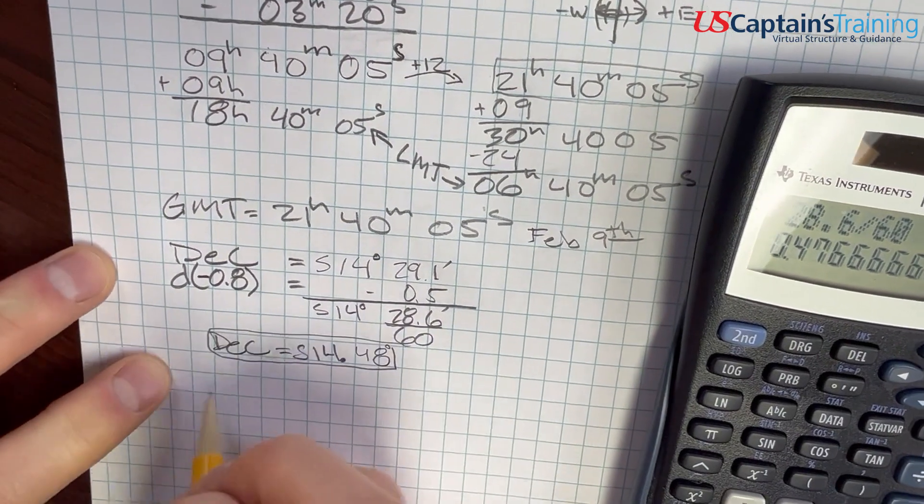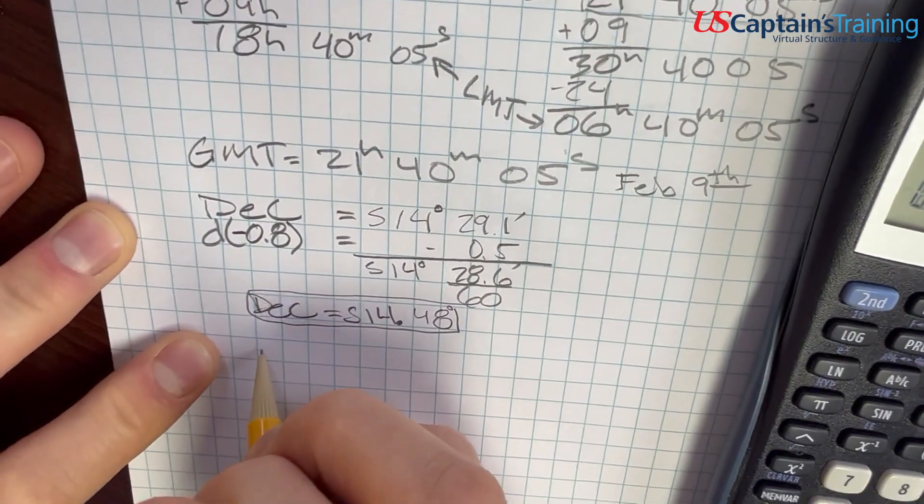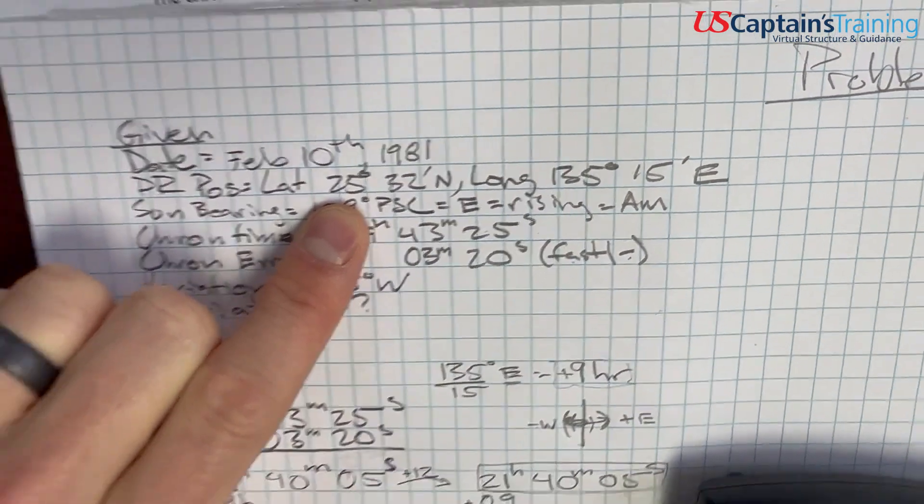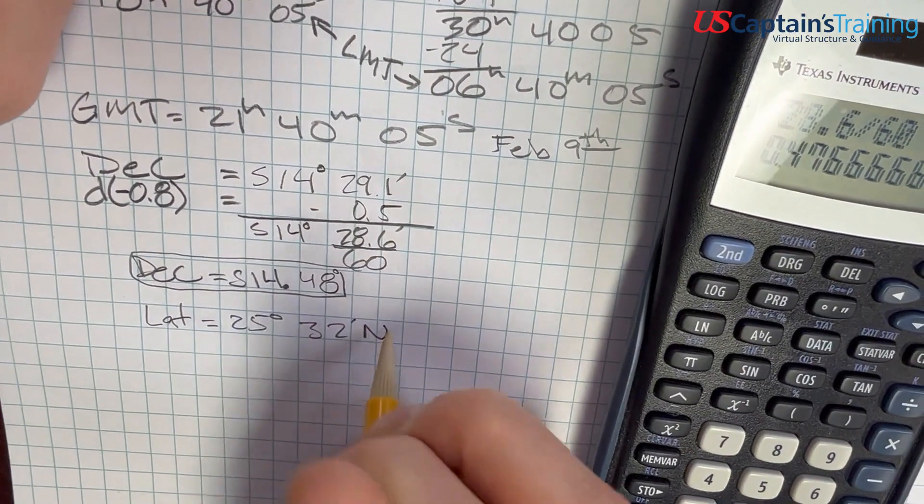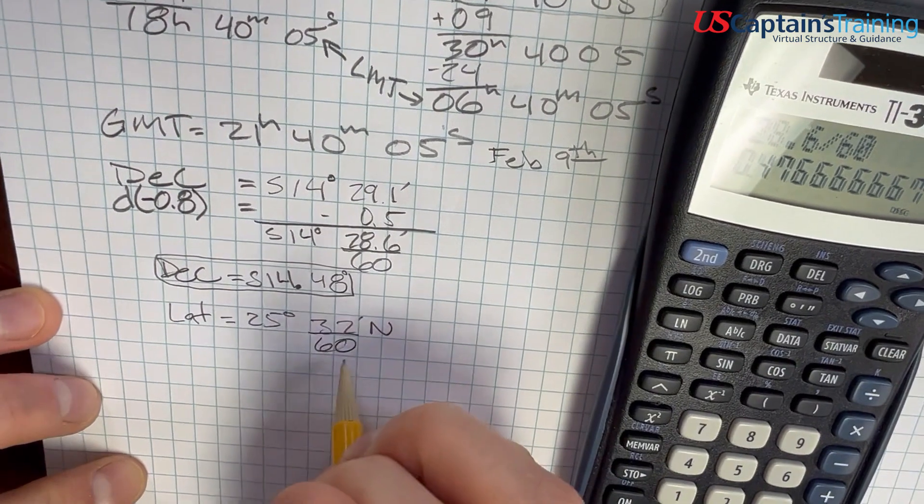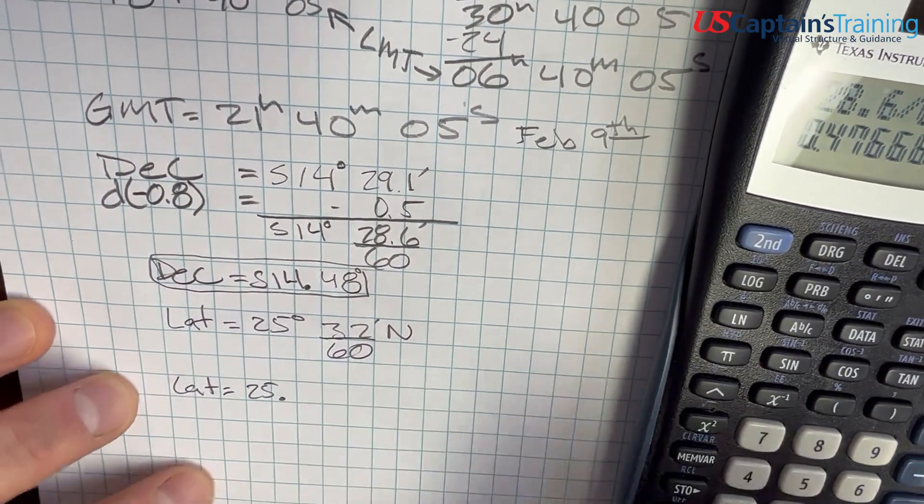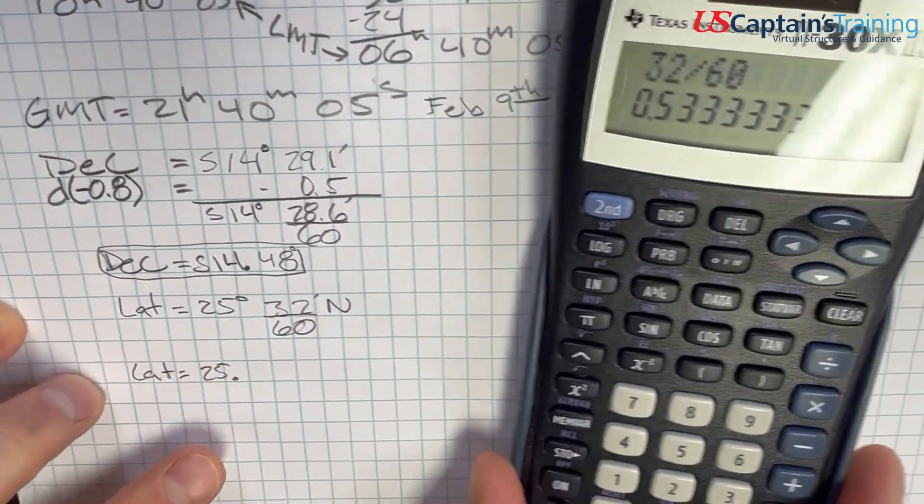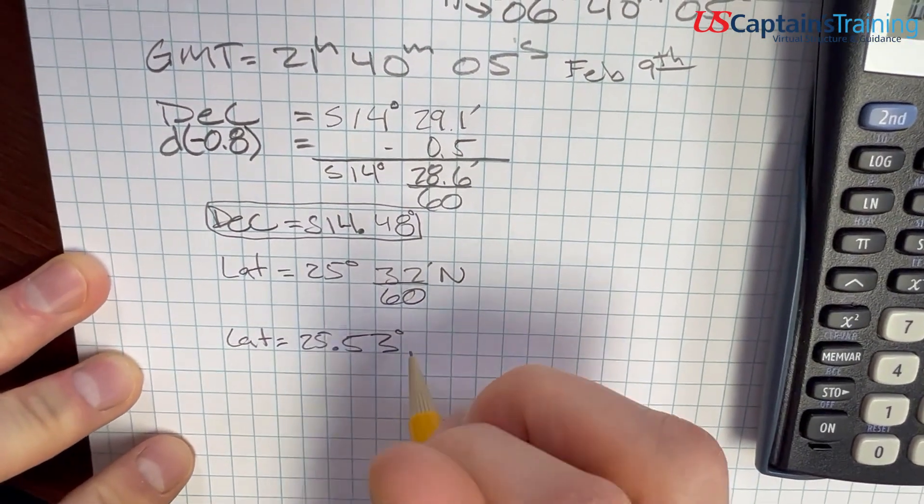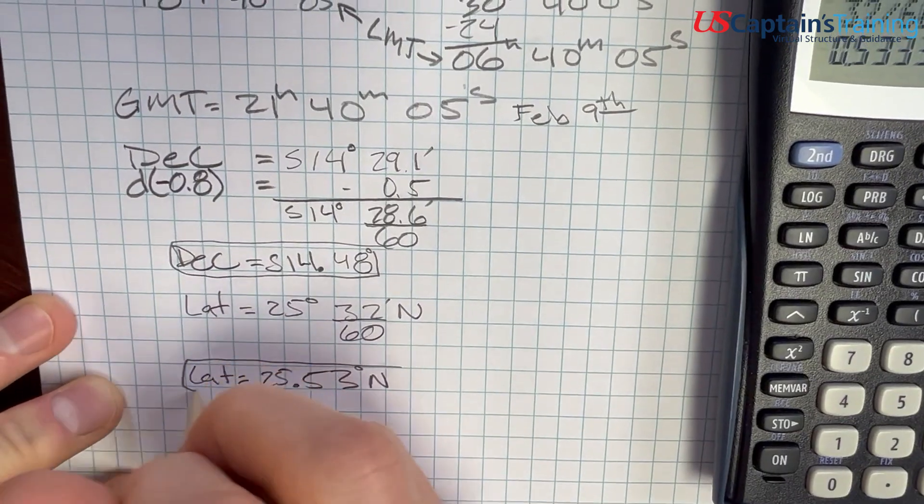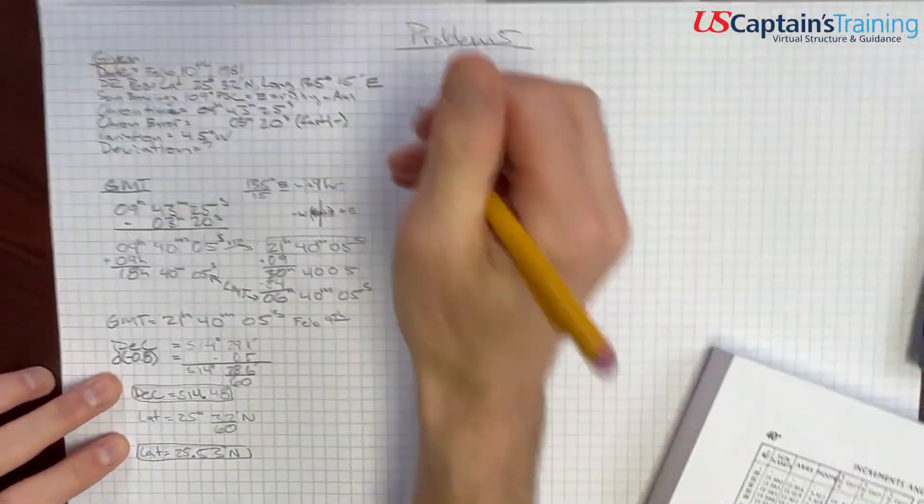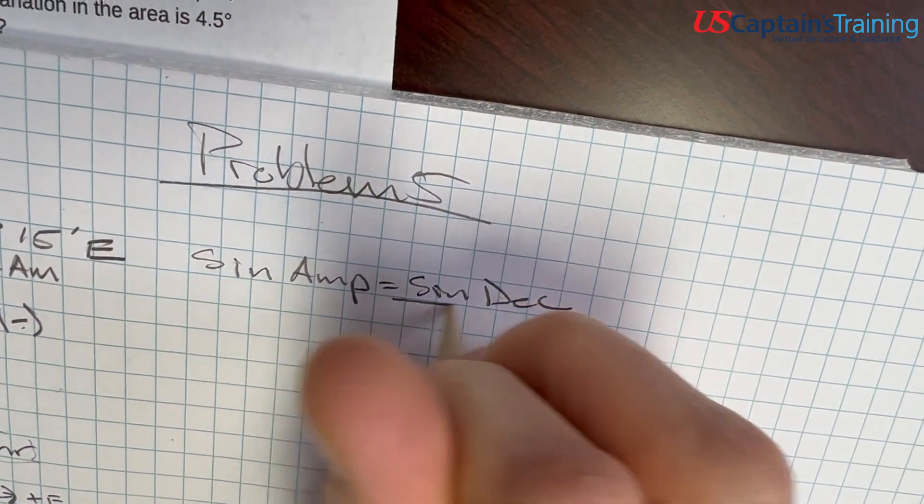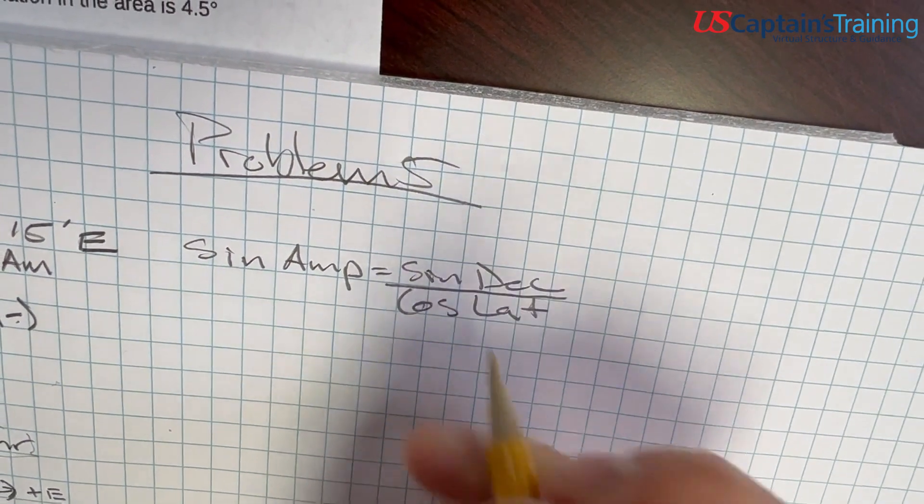Now we're going to take our latitude and turn it into only degrees. Our latitude is 25 degrees 32 minutes north. So we take this 32, divide it by 60, and now we get our latitude equal to 25 point what? 32 divided by 60 equals 0.53 degrees north. Now we have our latitude. With these two values, we can put this into our formula, which is the sine of the amplitude equals the sine of the declination divided by the cosine of the latitude.